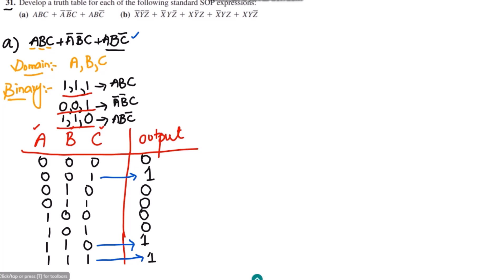For part B, the expression is: X prime Y prime Z prime, plus X prime Y Z prime, plus X Y prime Z, plus X prime Y Z, plus X Y Z prime. The domain of this expression is X, Y, Z — three variables — and the next step is to write the binary values for each term.